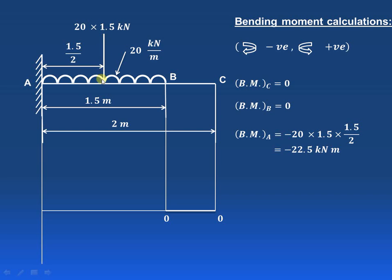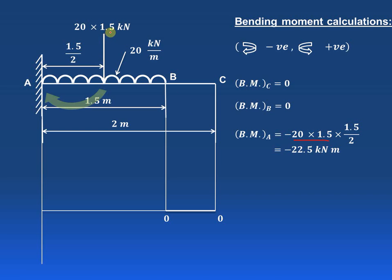We convert the UDL into a point load: 20 × 1.5 = 30 kN, acting at the center of the 1.5 meter length, i.e., at 1.5/2 = 0.75 m from A. This force produces a clockwise moment, which is negative. So bending moment at A = −(20 × 1.5) × (1.5/2) = −22.5 kilonewton meter. The first two terms represent the converted point load and the perpendicular distance gives the moment.